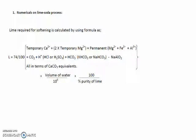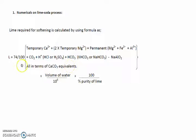Here is the formula to calculate the quantity of lime, that is calcium hydroxide, required to soften the given water sample. L, that is lime required for softening, equals 74 by 100, where 74 is the molar mass of lime and 100 is the molar mass of calcium carbonate, because we are converting calcium carbonate equivalents to calculate lime quantity.